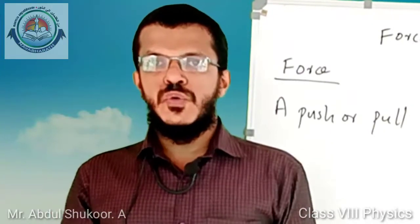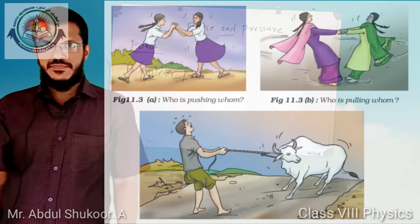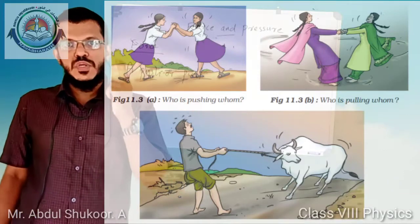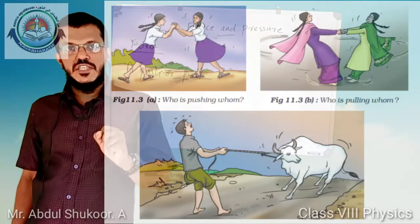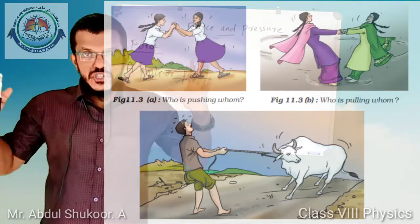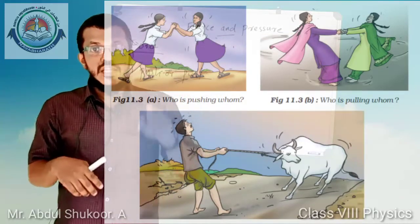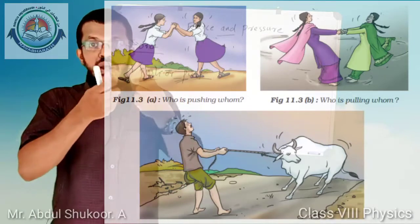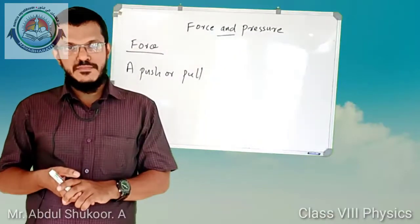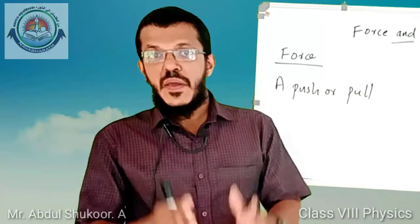Let us observe the figures given to you. There are three figures. In figure one, both girls appear to push each other. In figure two, the pairs of girls are trying to pull each other. Similarly, the cow and the man in figure three appear to pull each other. The man and the cow also experience force on each other.